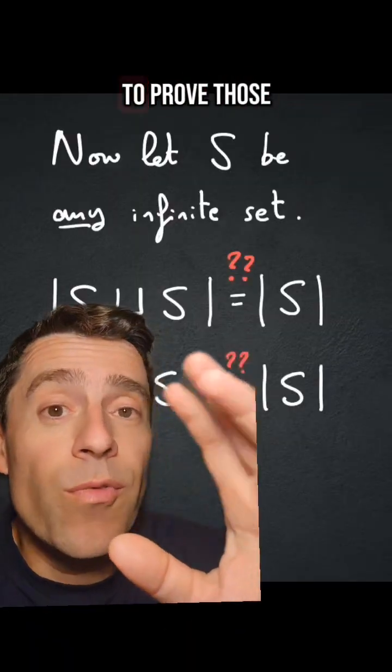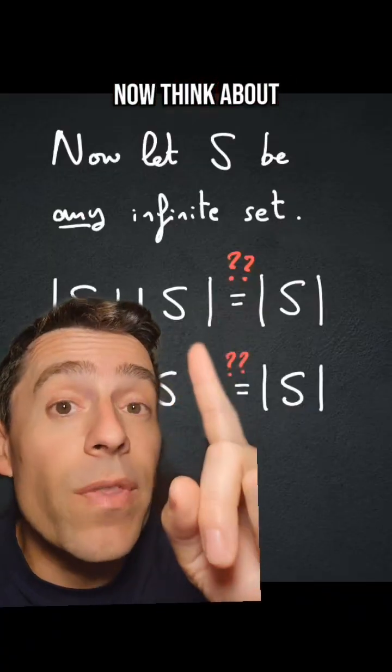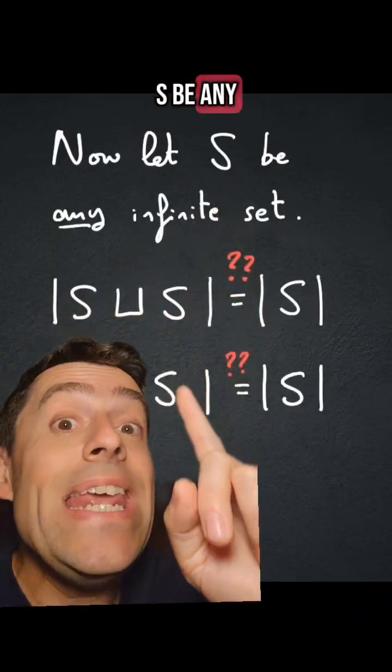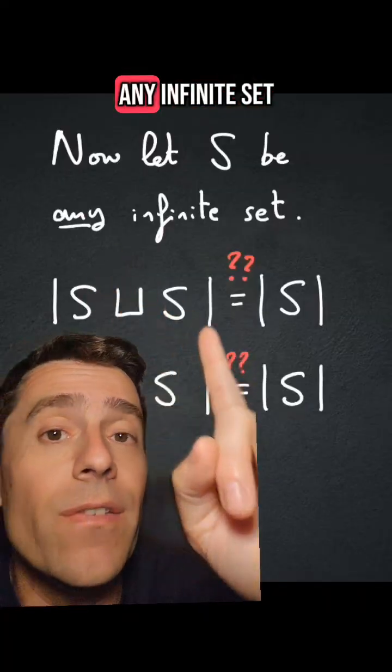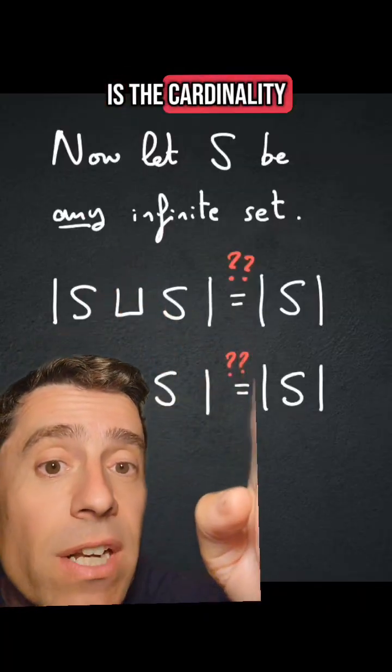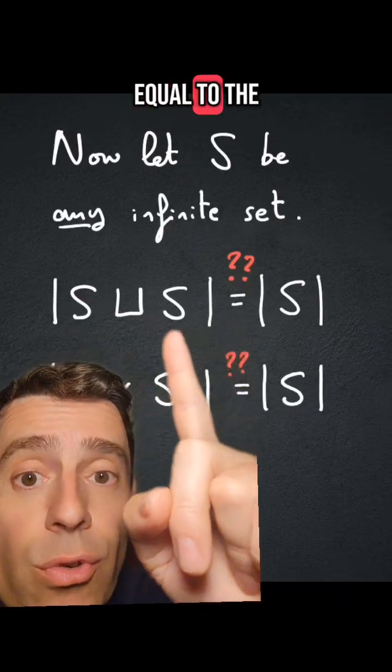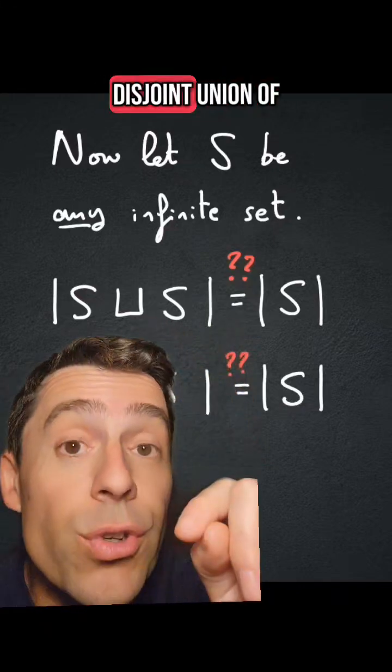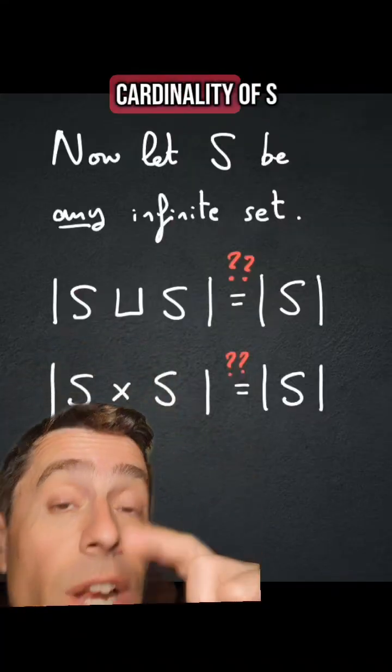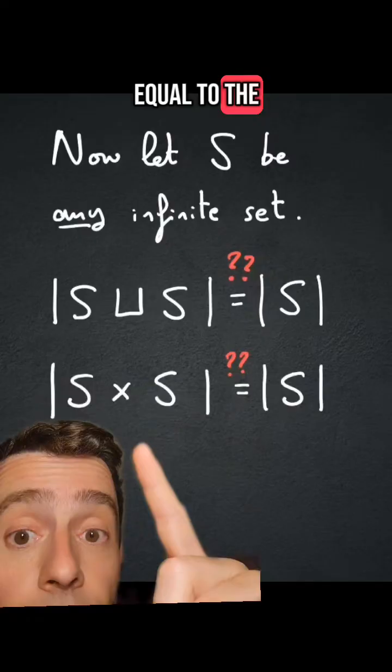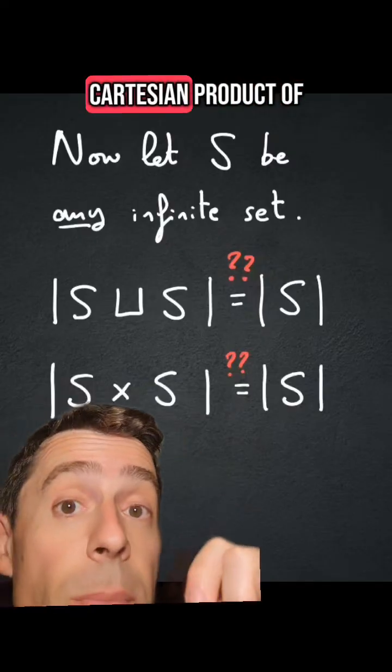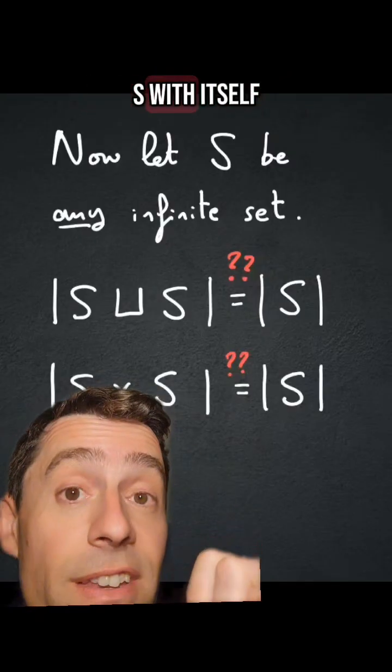And if you have been able to prove those three statements, now think about this one. Let S be any infinite set. Is the cardinality of S equal to the cardinality of the disjoint union of two copies of S? And is the cardinality of S equal to the cardinality of the Cartesian product of S with itself?